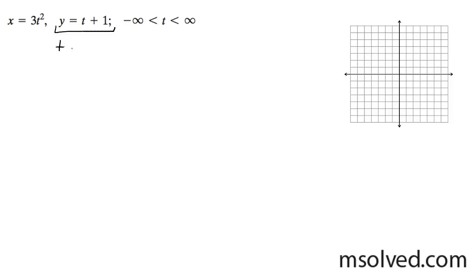The equivalent of this, we can rewrite this as t equals y minus 1. Let me substitute this in the equation here. We get x equals 3 times y minus 1 squared.